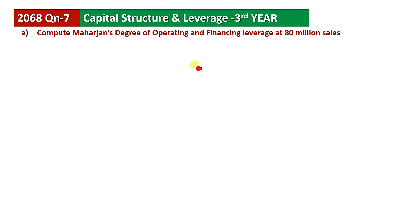Compute the degree of operating leverage and degree of financing leverage at 80 million sales. 80 million sales is the case. Now we have degree of operating leverage and degree of financing leverage.